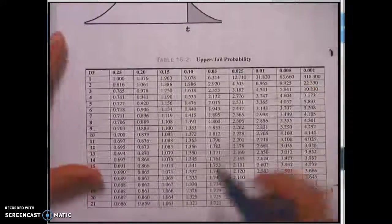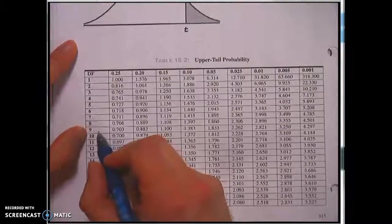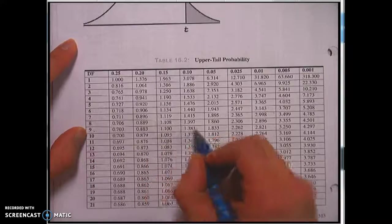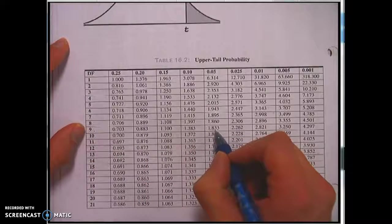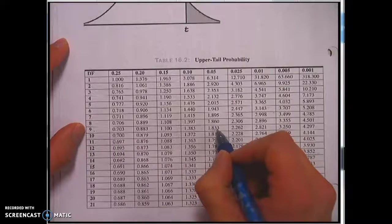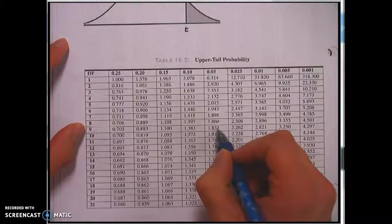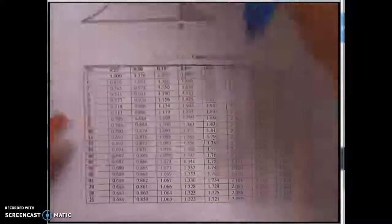So my degrees of freedom chart, degrees of freedom of 9, going over to 0.05, that's 1.833. But it's positive and negative, because it's both sides. Positive and negative 1.833.